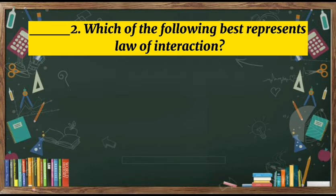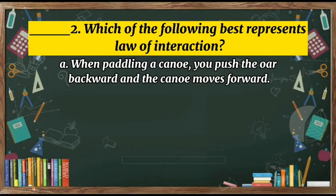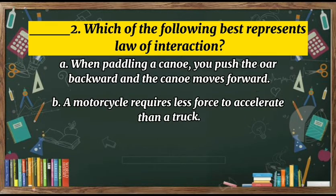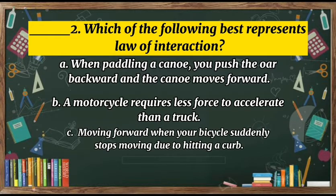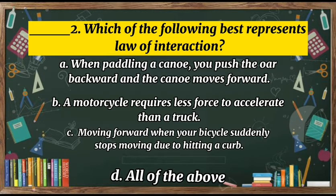Number two: Which of the following best represents the law of interaction? A. When paddling a canoe, you push the oar backward and the canoe moves forward. B. A motorcycle requires less force to accelerate than a truck. C. Moving forward when your bicycle suddenly stops due to hitting a curb. D. All of the above.